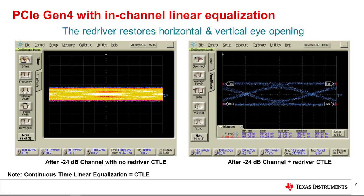Here we see what happens when a redriver is added to the PCIe link to help compensate for channel attenuation. As I mentioned before, the redriver compensates for high frequency losses in the transmission media, restoring horizontal and vertical eye opening in the received waveform. With this eye opening at the system receiver, we require only minimal additional equalization to completely optimize the eye opening, as well as recover the data with high margin.